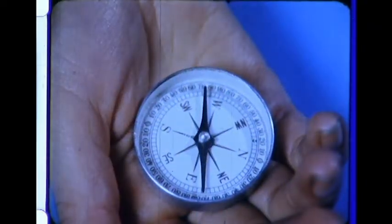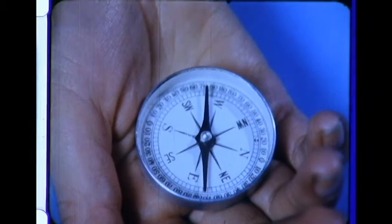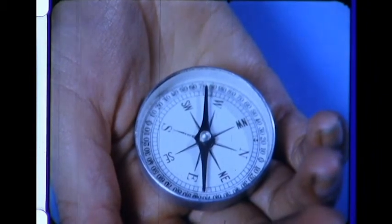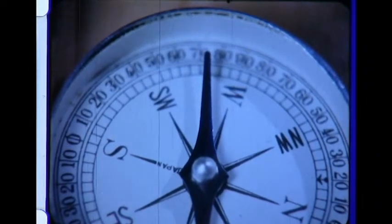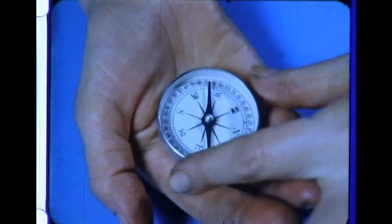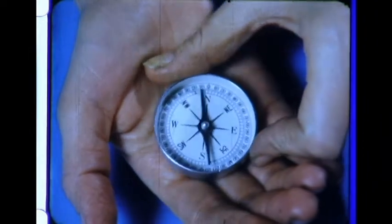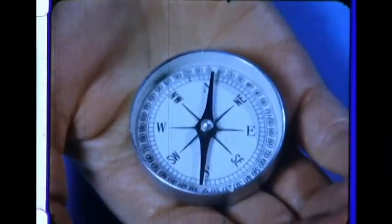In much the same way, we can use the magnetized needle or pointer in a compass. The needle always points north and south. Now let's line up the dial. We make sure that the north pole of the compass pointer lines up with north on the compass dial.